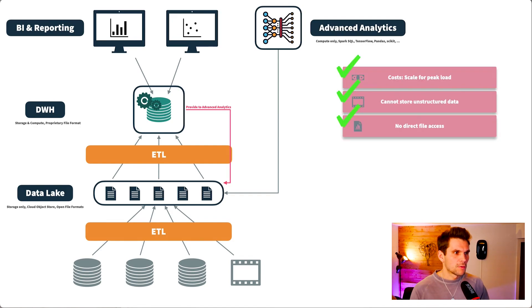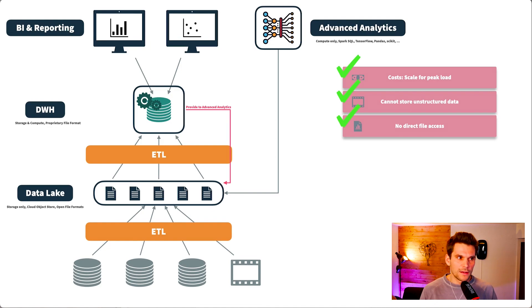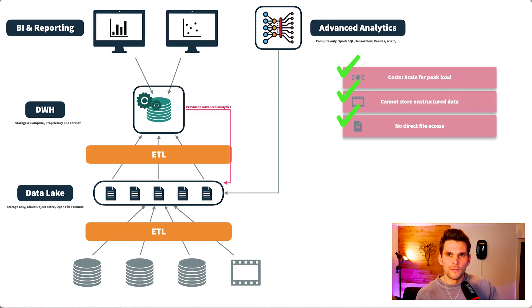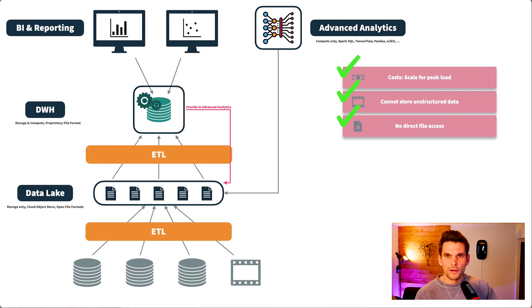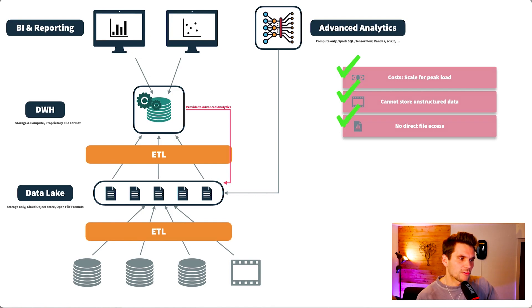So we end up with this architecture. Looking at the challenges we faced with the data warehouse: we wanted to overcome the cost of scaling — that's now addressed because we can store vast input data in the data lake. We can also now store unstructured data directly in the data lake as files, and we've overcome the direct file access challenge as well.